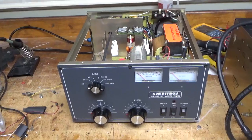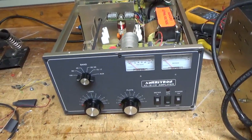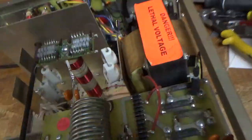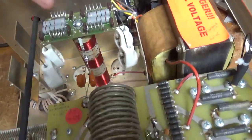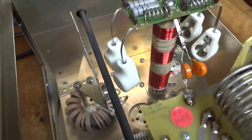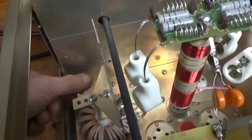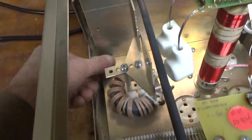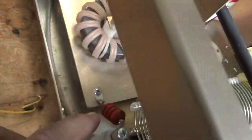Hey, everybody. I'm back with the completed Ameritron AL811H. Did the bias modification. Choke is nice and secure now. Replace the straps. Grounded the grids. You saw that underneath there. That's all done.